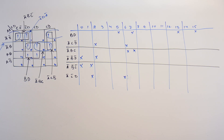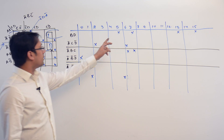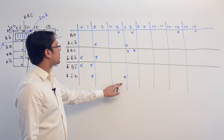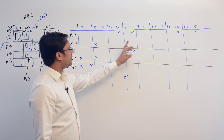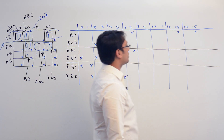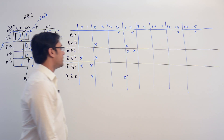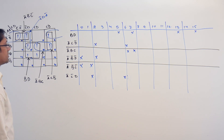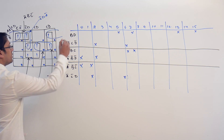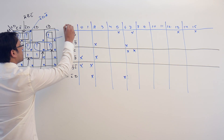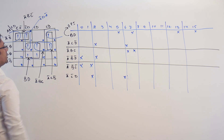There is only one essential prime implicant which is BD. Here you can see BD is covering minterms 13 and 15, which are not covered by anything else. Therefore BD is an essential prime implicant and BD should be there in the solution.